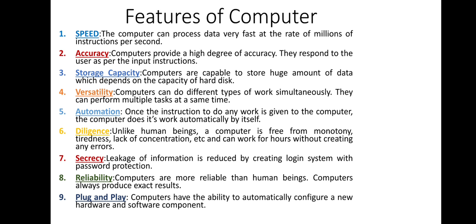Storage capacity — we can store our documents in a computer. Depending on the hard disk capacity, we can store our data accordingly. Versatility — a computer performs different types of work. Automation — a computer does its work automatically.